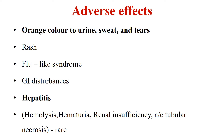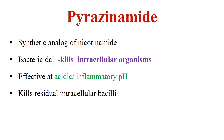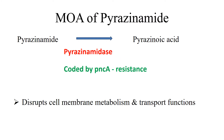Another first-line drug is pyrazinamide. It is a synthetic analog of nicotinamide. It is a highly bactericidal drug that kills intracellular mycobacteria, especially the residual intracellular bacilli. This agent is effective at acidic or inflammatory pH. Pyrazinamide exhibits its anti-tubercular function by being converted into its active form pyrazinoic acid, with the help of an enzyme pyrazinamidase. Pyrazinoic acid disrupts cell membrane metabolism as well as transport functions of the mycobacterial cell.